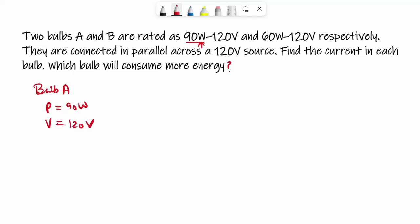So we can find current with respect to it. I is nothing but, like we know that P is IV. So from this value, I can understand that I is equal to P over V. That means 90 over 120. So this will give me 9 over 12, which is 3 by 4, and 3 by 4 is 0.75 ampere.